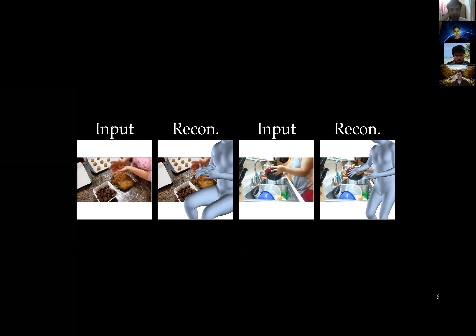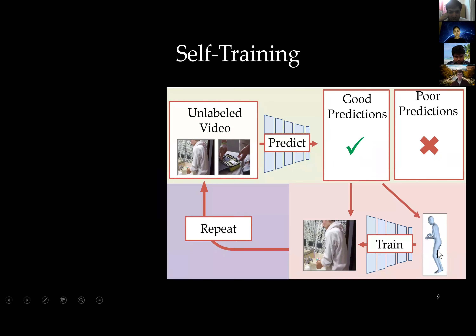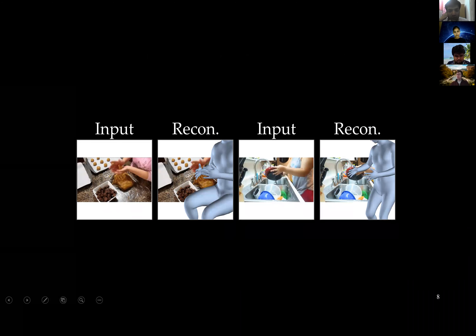We use a couple of existing models — HMR is a pretty common one. What it does is predict SMPL parameters. SMPL is a way to parameterize a 3D human body, and the network predicts those parameters. From that, it basically constructs a 3D mesh.